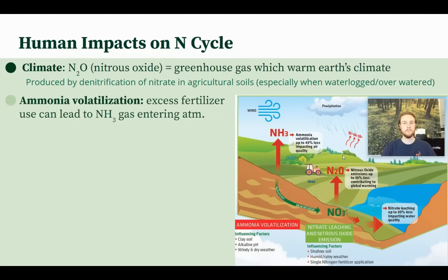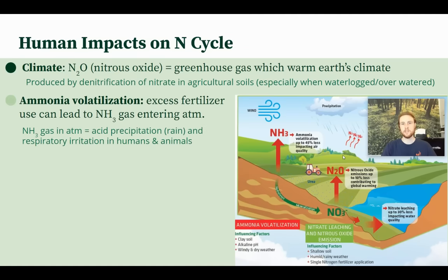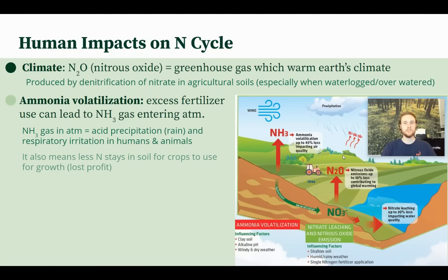There's also ammonia volatilization, where excess fertilizer can lead to ammonia gas entering the atmosphere. This creates a couple of issues. One is acid precipitation — ammonia can combine with water in the atmosphere and fall to Earth as acidic rain, creating environmental problems. There's also a human health consequence: ammonia gas in the atmosphere can combine with other pollutants and irritate the respiratory tracts of humans. It also represents lost nitrogen from agricultural fields, resulting in lost profits for farmers.